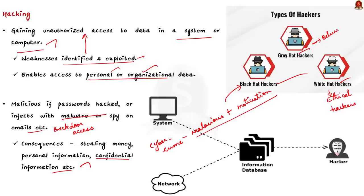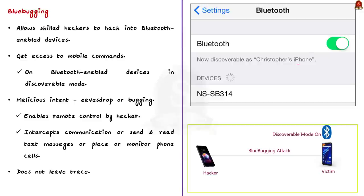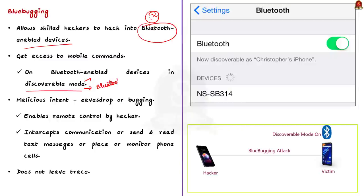Coming to the topic in the news article — blue bugging. This is a technique that allows skilled hackers to hack into Bluetooth-enabled devices. Through this, they get access to mobile commands on Bluetooth-enabled devices that are in discoverable mode. Discoverable mode is a state within Bluetooth technology that enables devices to search, connect, and transfer data. So when you switch on Bluetooth in your mobile, you are making the device to be in discoverable mode. Through blue bugging, hackers eavesdrop on private conversations or bug your phone, meaning the device can be remotely controlled, allowing hackers to intercept or reroute communication.